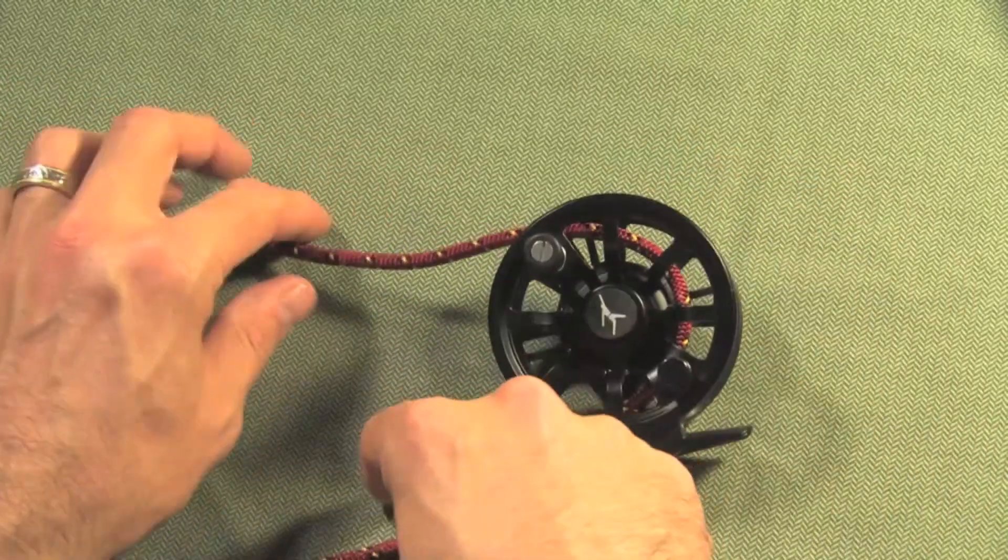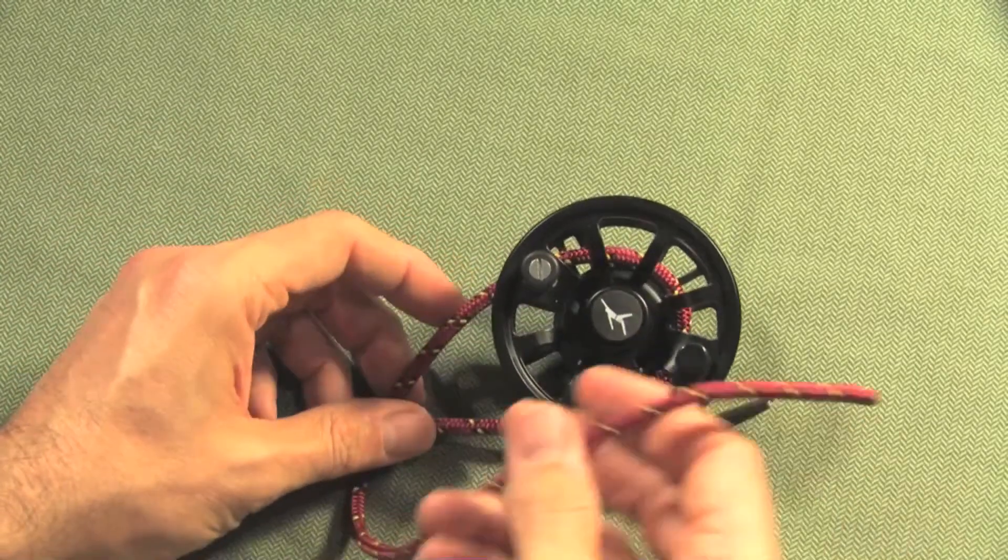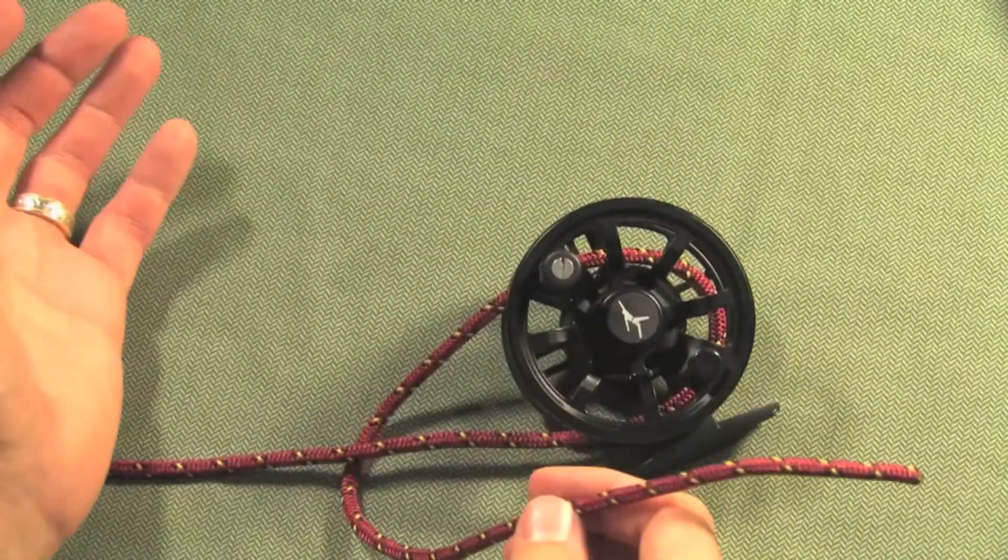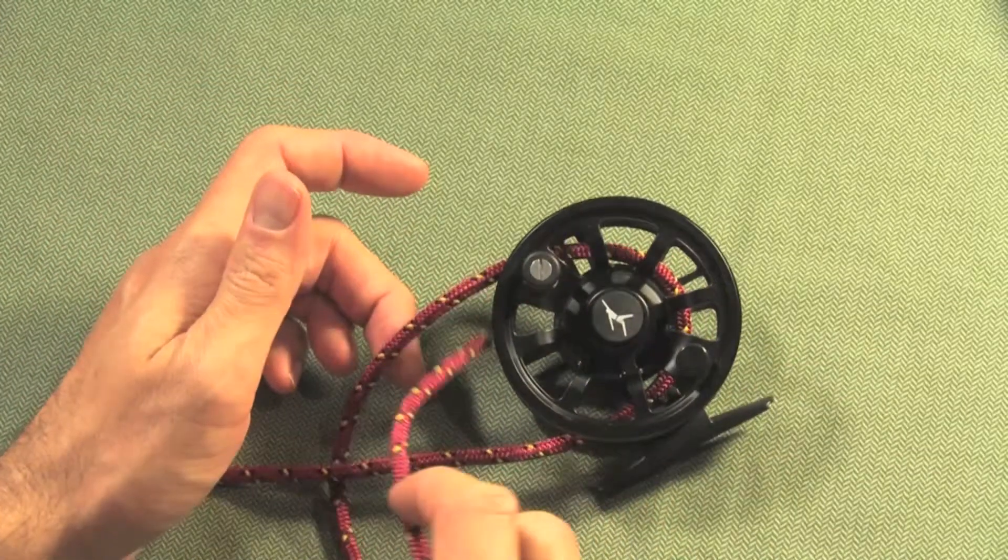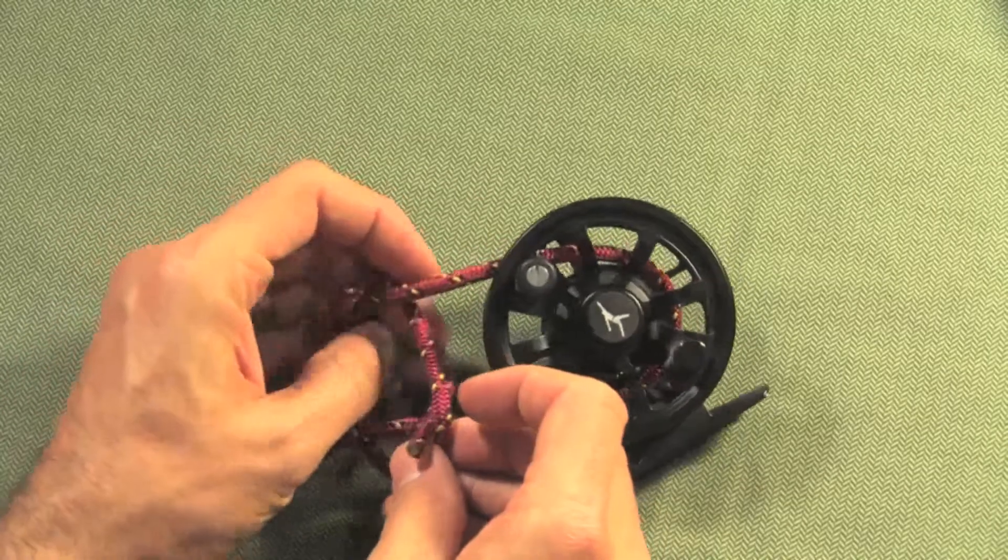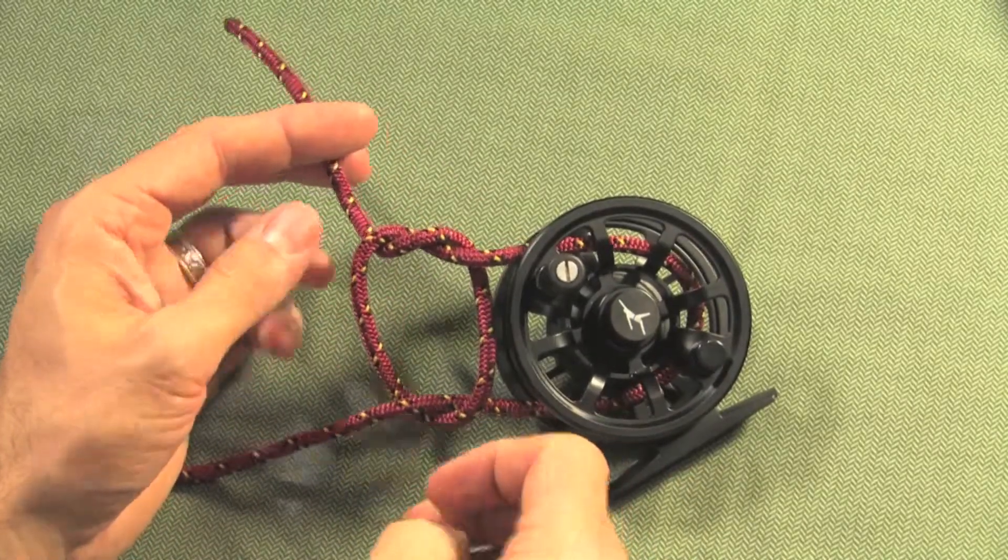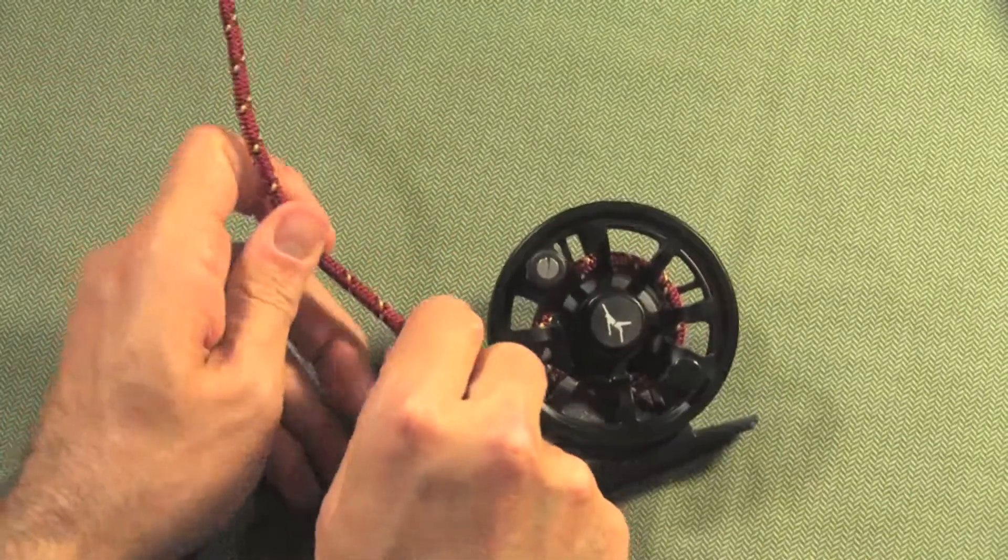So we take the short end and tie a simple overhand knot of the backing onto itself and tighten that down.